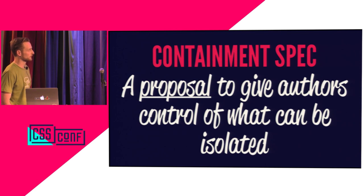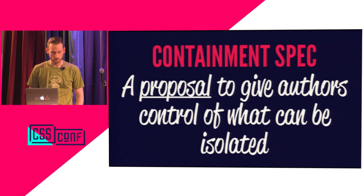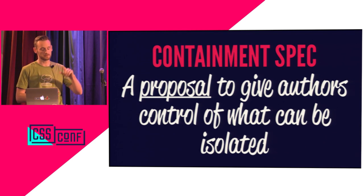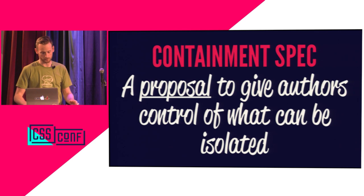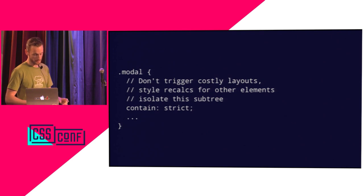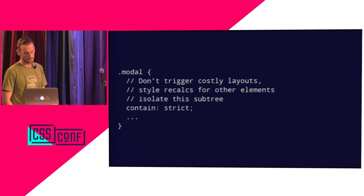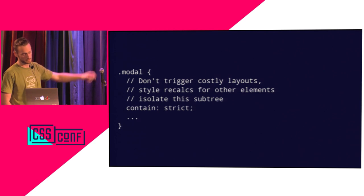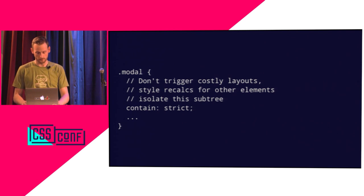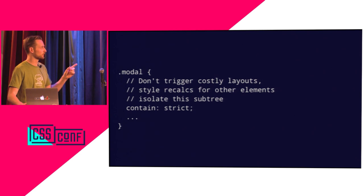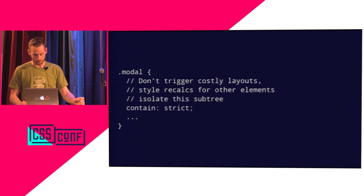There is a spec called CSS Containment. This will give you control to say you know this is an isolated piece on your page and the browser doesn't need to work out the position of everything else. It's really simple — it's just a single property called contain with a few values: style, paint, and layout. There's also a collective term called strict, meaning don't cause any styles, paints, or recalculations on this element. Unfortunately, no browser has this yet — it's just a specification. Hopefully people will start implementing it soon, so you can say this is isolated and it shouldn't affect performance on the rest of your website.